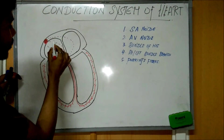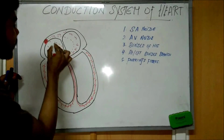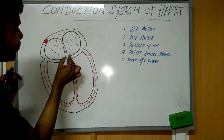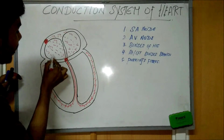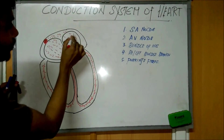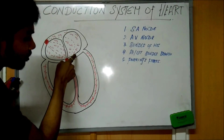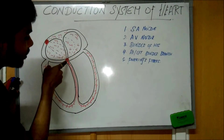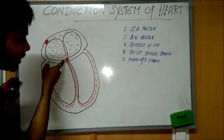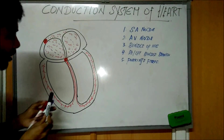The electric impulses which arise from the SA node travel through the three fibers, depolarizing the auricles. The impulses cannot pass through the bad-conductor portion of the septum, so they come to the AV node. From the AV node, the impulses move to the Bundle of His.